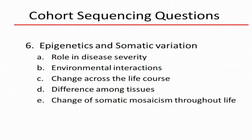Then epigenetics — apologies for the experts in the audience, I lumped together epigenetic changes and somatic variation into one category here, probably wrongly. We can look at the role of both in disease severity, particularly late-onset diseases, and the role of environmental influence on both epigenetics and somatic variation. Changes in life course — Steve did a nice job talking about the upcoming ENCODE papers, looking at multiple new dimensions of the human genome. We can look at changes in the genome across the life course.